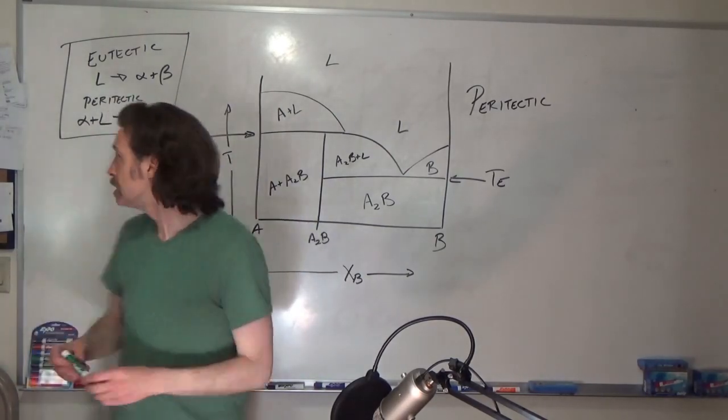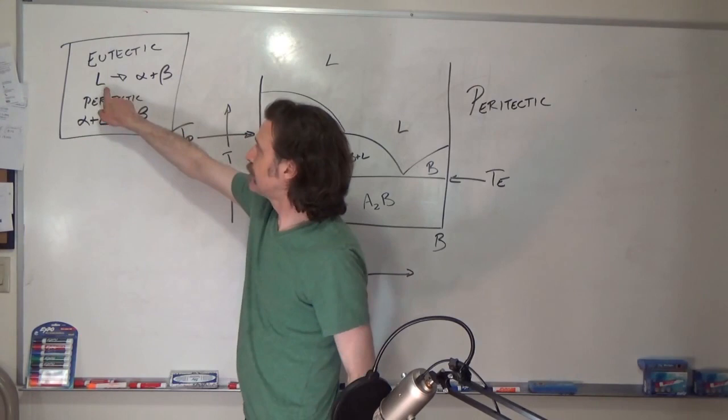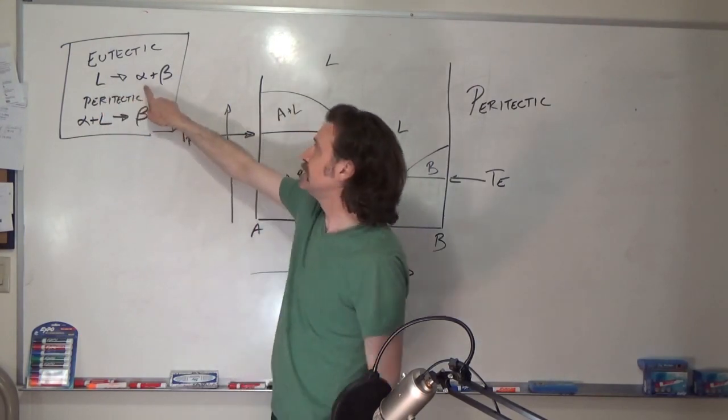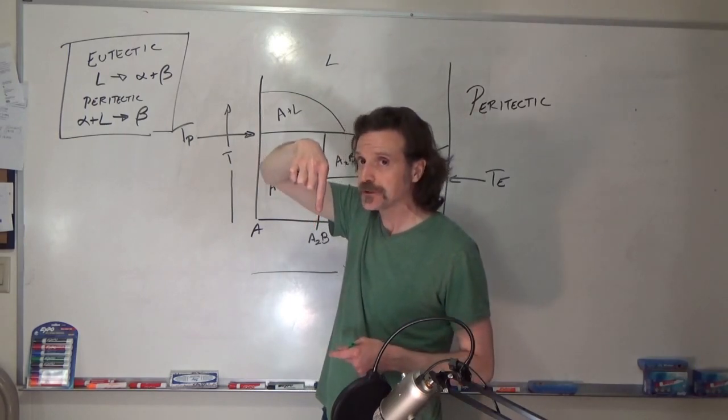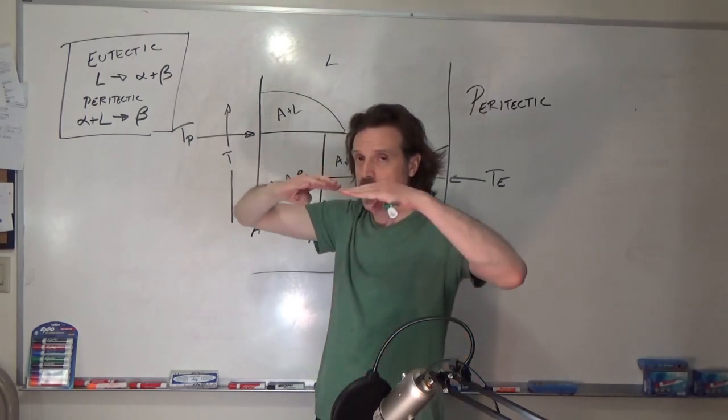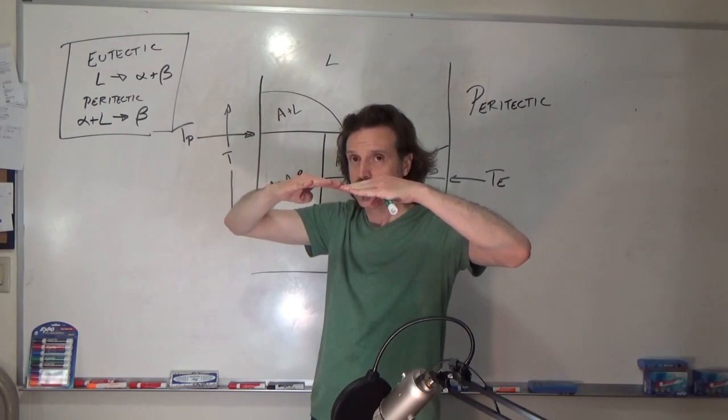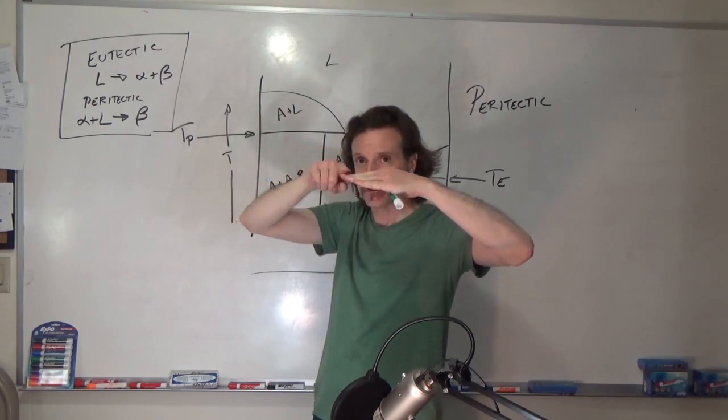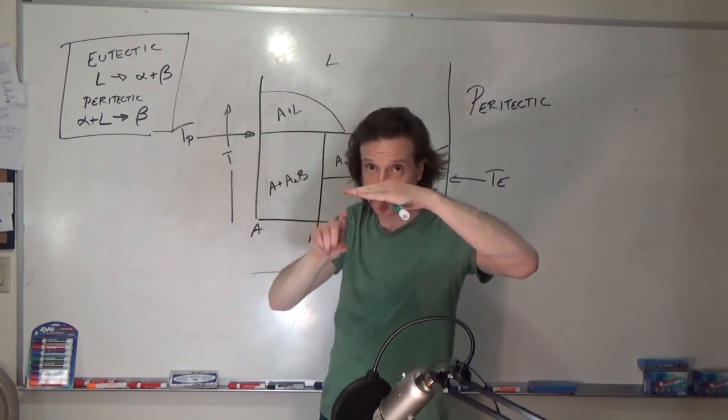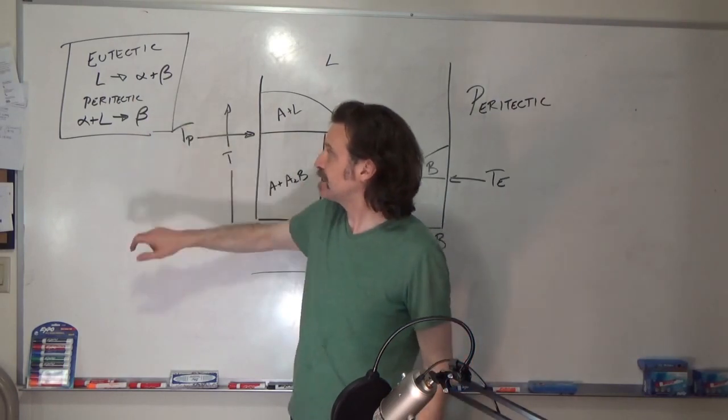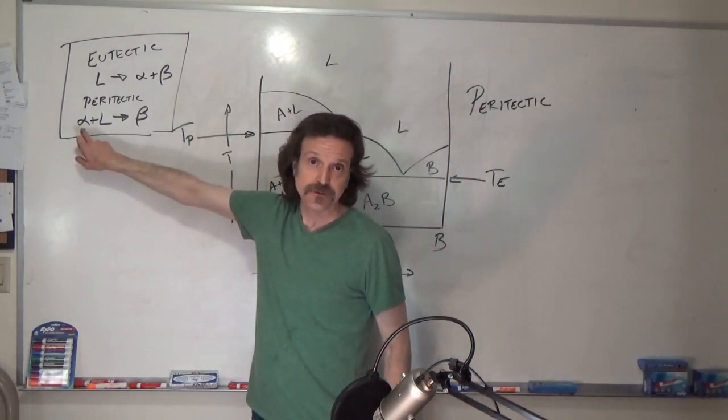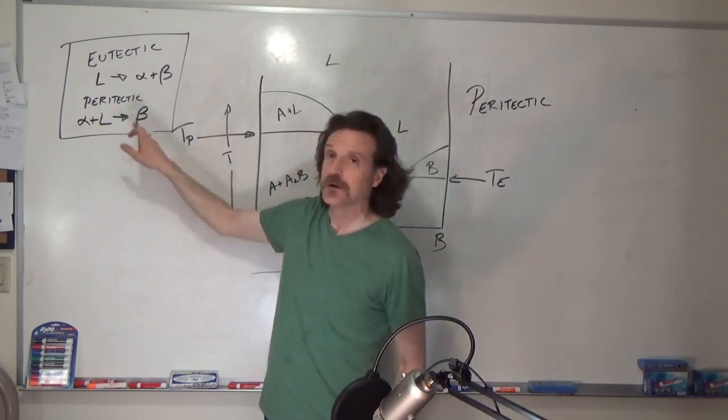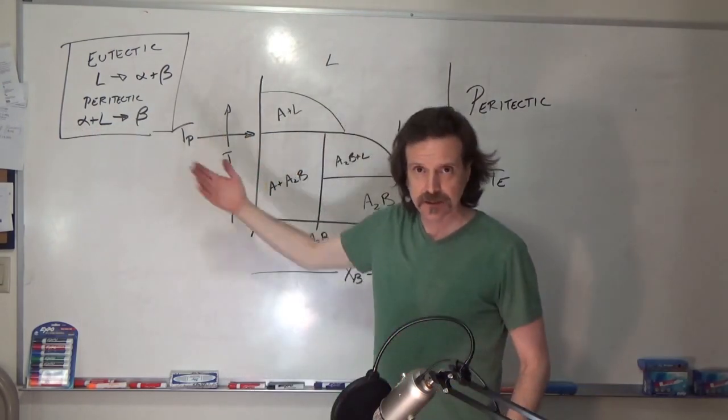So the eutectic, you have liquid turning into alpha plus beta. You're going through the eutectic temperature at the eutectic composition, and the liquid transforms into two solids. In the case of the paratectic, we have two phases, an alpha and a liquid, transforming into a single solid.